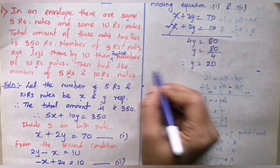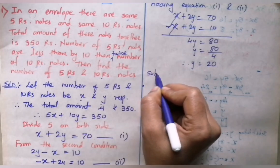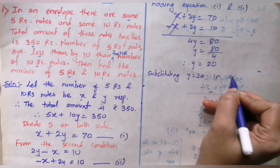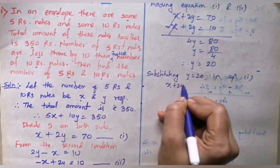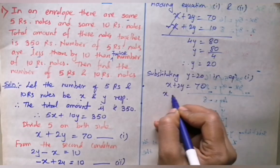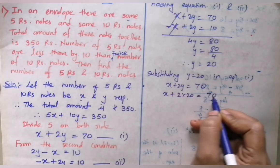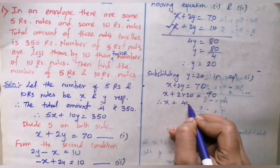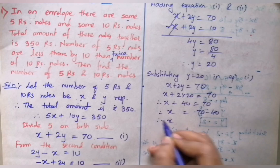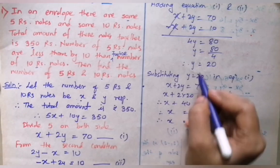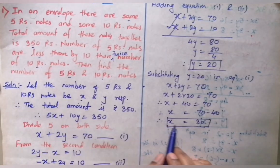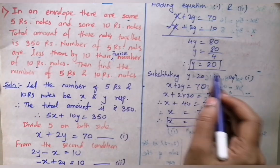Now we have the value of y. We need to find the value of x. Substituting y equals 20 in equation 1: x plus 2 multiplied by 20 equals 70. Therefore x plus 40 equals 70, and x equals 70 minus 40. Therefore x equals 30. So the number of ₹5 notes is 30 and the number of ₹10 notes is 20.